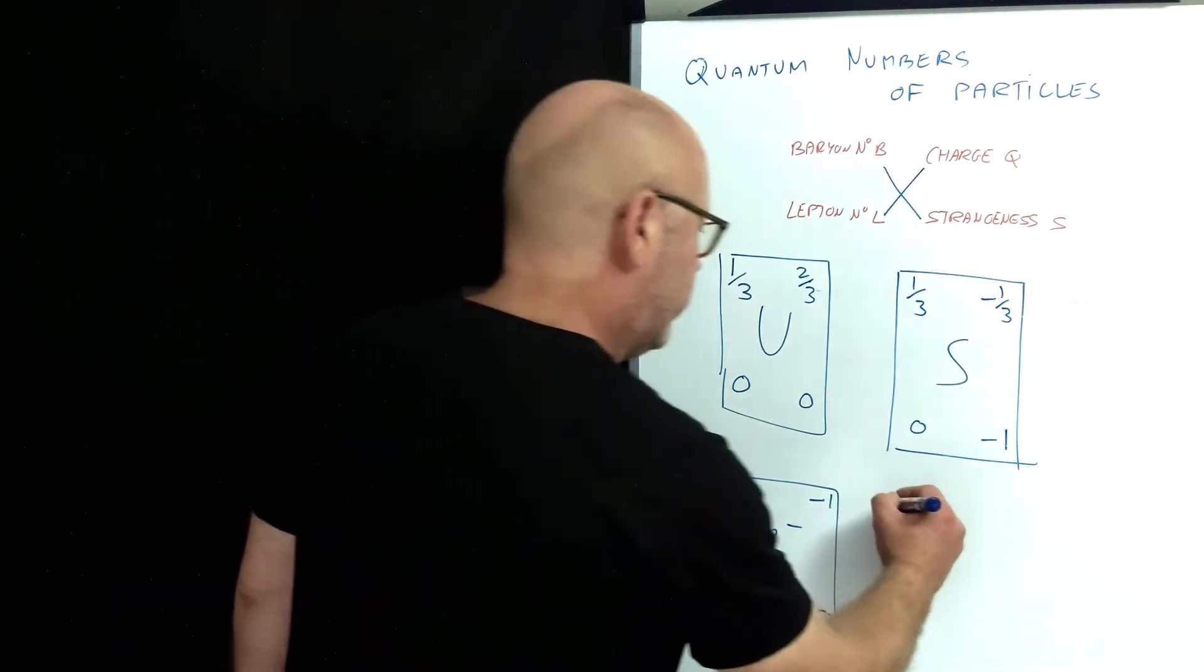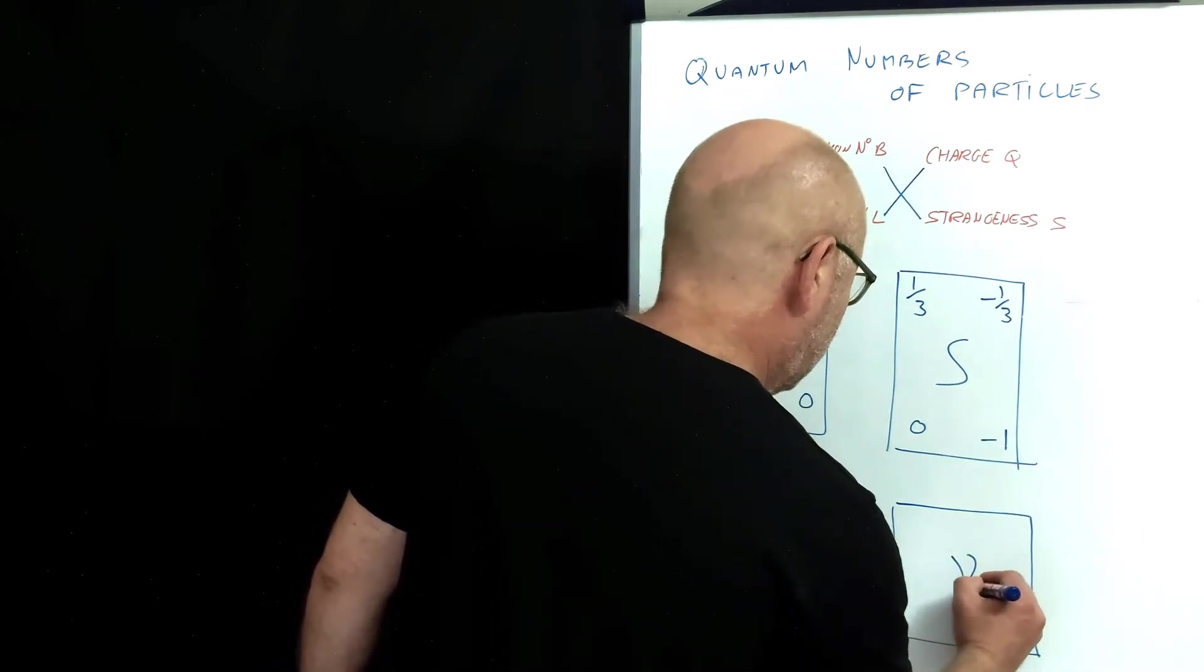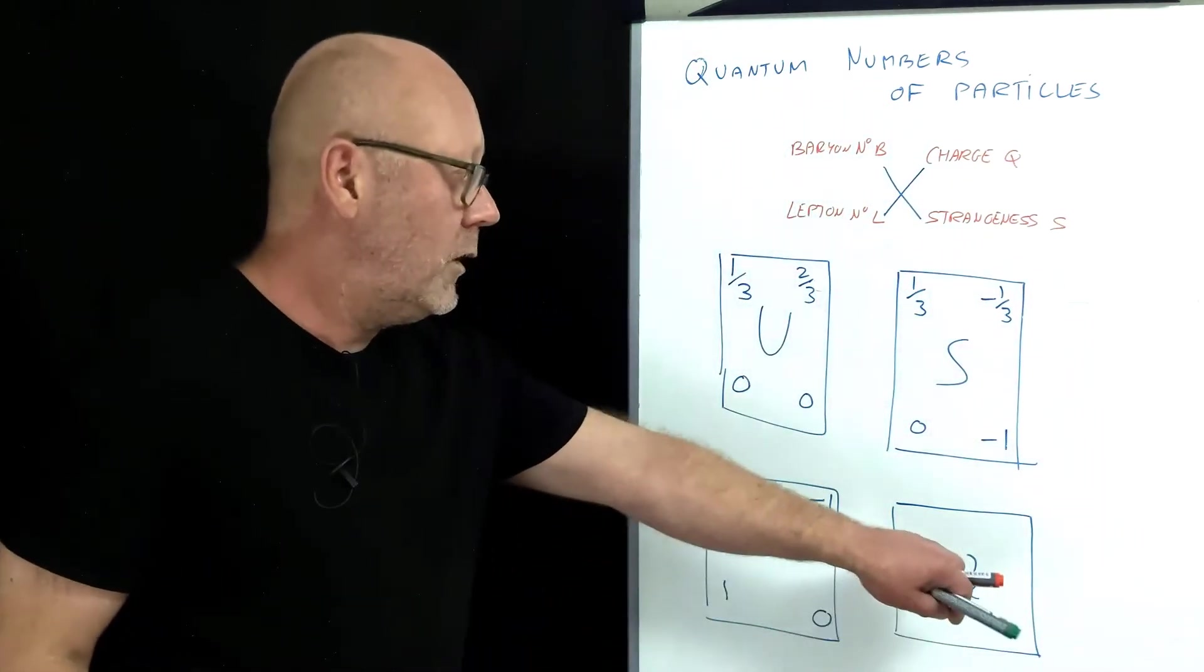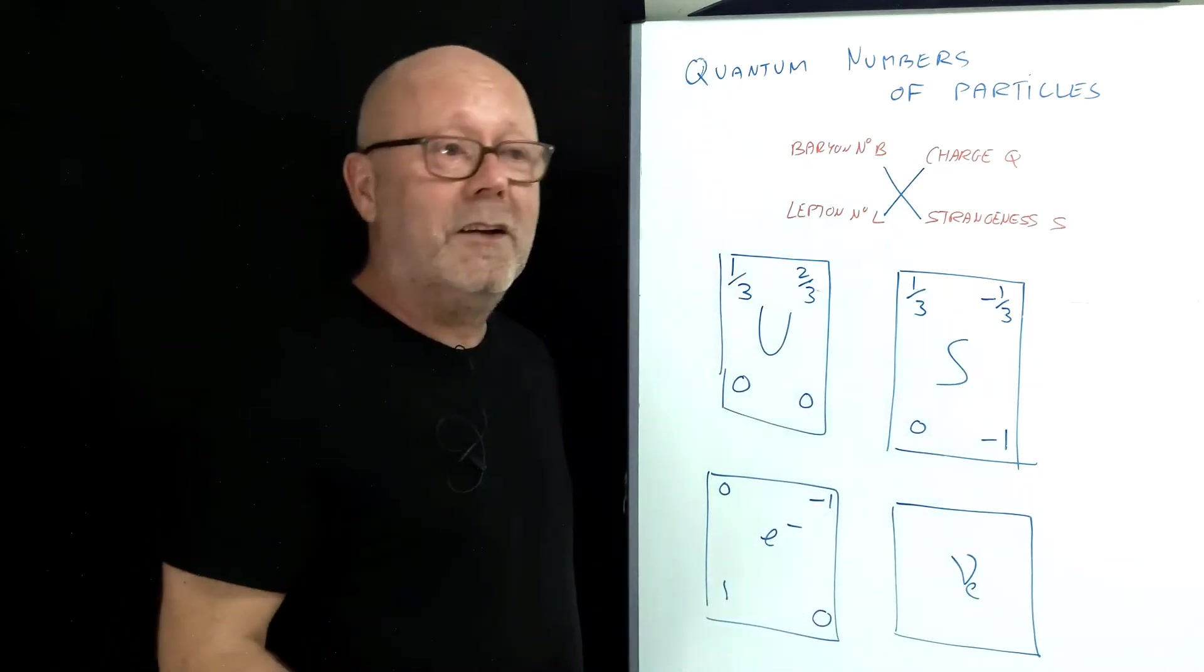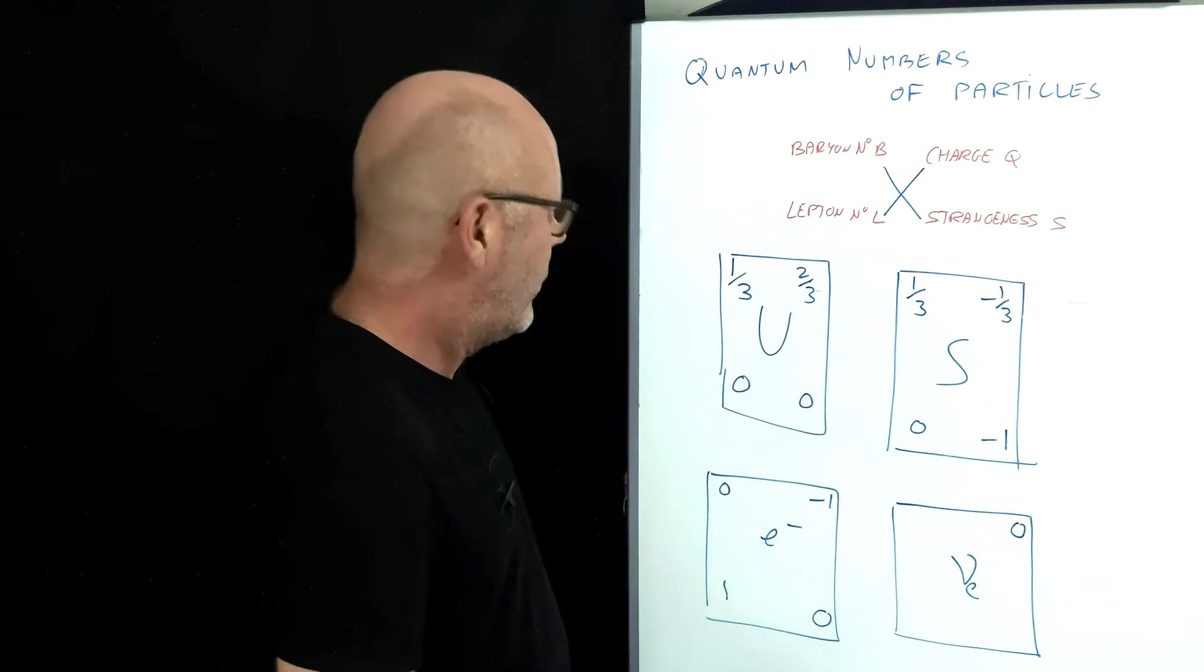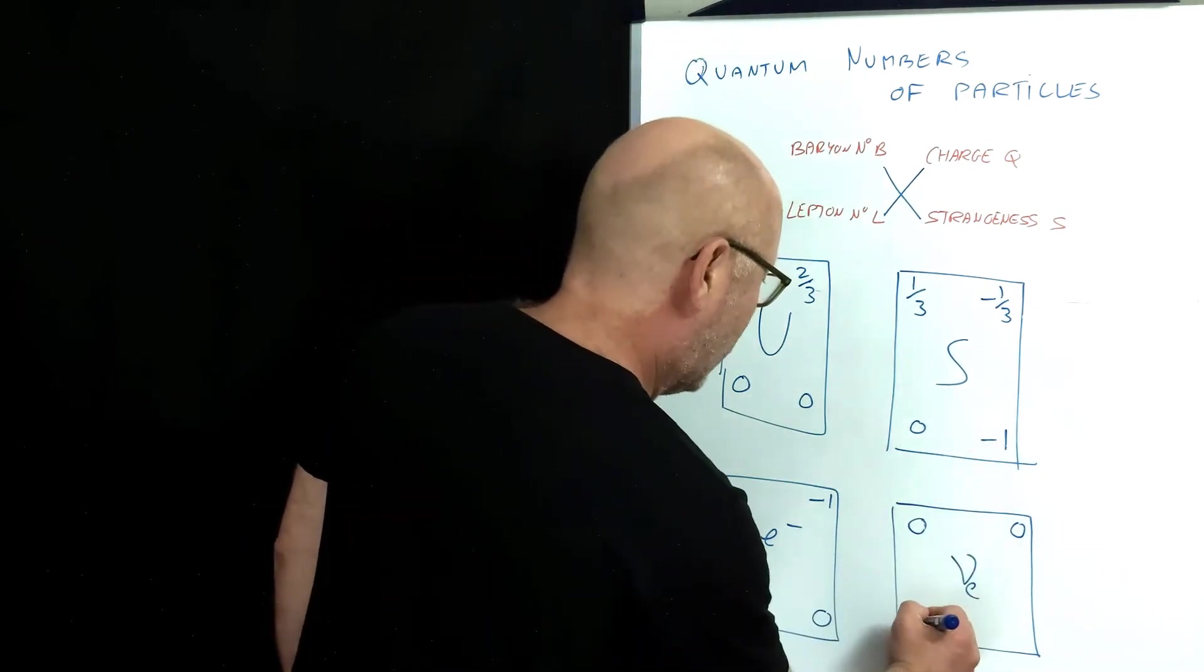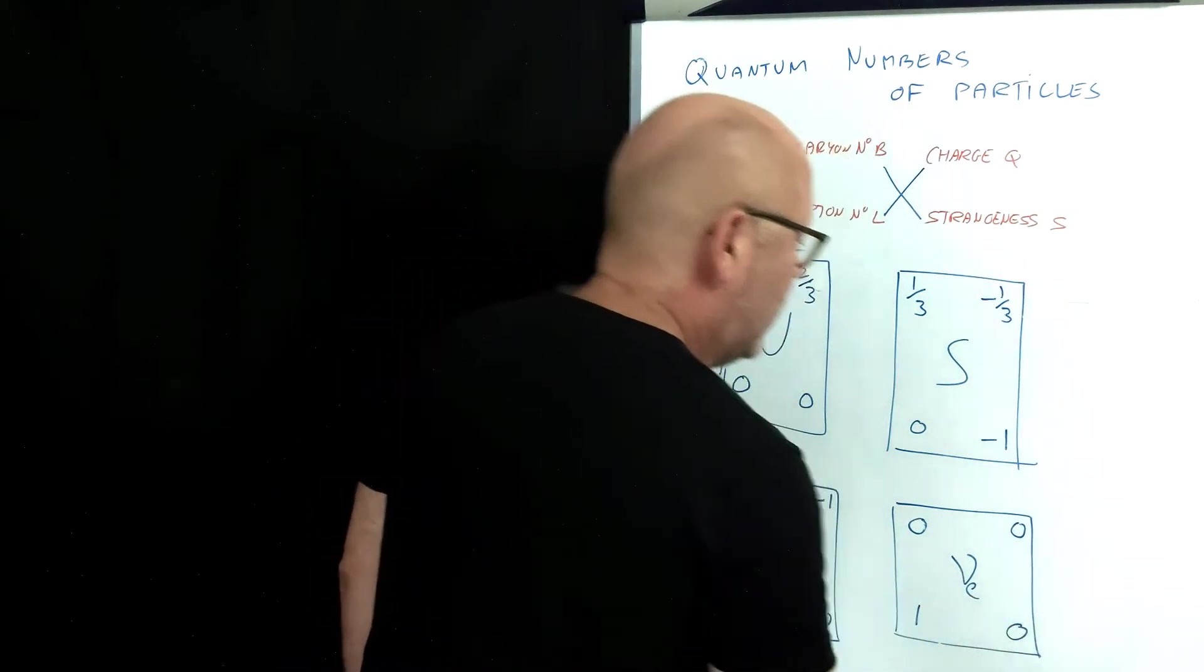Let's consider the neutrino. The neutrino has no charge. It's neutral. Neutrino means small little neutral in Italian. It is not a baryon, but it is a lepton. It's not a strange quark, so it's got a strangeness of zero.